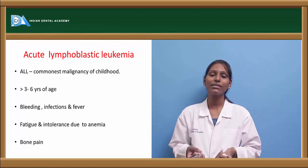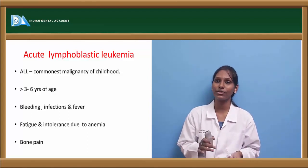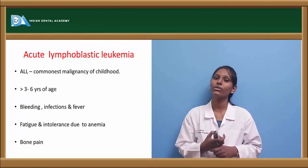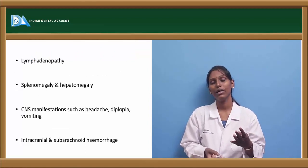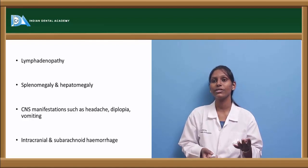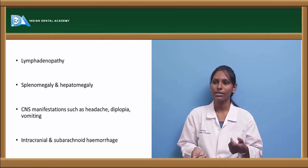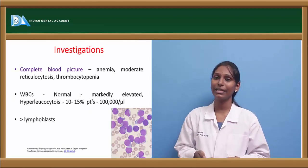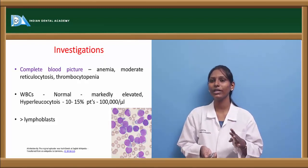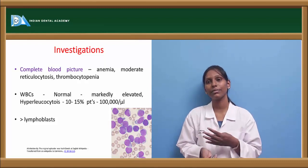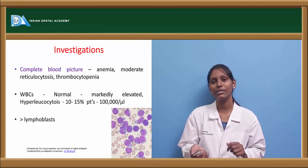Acute lymphoblastic leukemia (ALL) is the most common malignancy in childhood, most commonly seen in children aged 3 to 6 years. Bleeding, infections, and fever are the most common presenting symptoms. Patients also have fatigue, intolerance to anemia, and bone pain. Lymphadenopathy is the most common manifesting sign, with splenomegaly and hepatomegaly also present. CNS manifestations include headache, diplopia, and vomiting, and there can be intracranial and subarachnoid hemorrhages. Investigations show anemia, moderate reticulocytosis, thrombocytopenia due to bone marrow infiltration, and WBCs that are normal to markedly elevated — hyperleukocytosis above 1 lakh per microliter can be seen in about 10 to 15% of patients, with increased numbers of lymphoblasts.